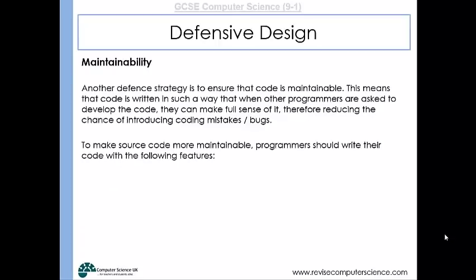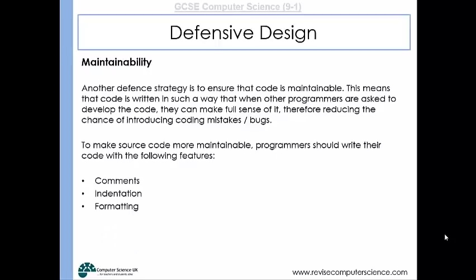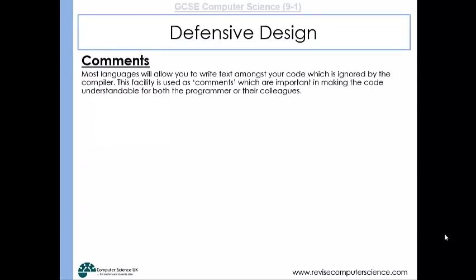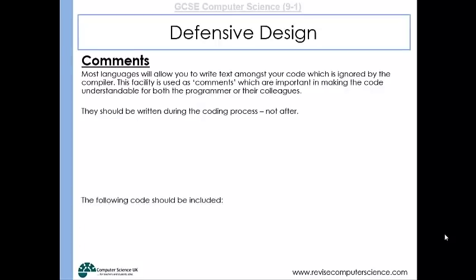To make source code more maintainable, programmers should write their code with the following features: comments, indentation, and formatting. When it comes to comments, this is where you write text which will be ignored by a translator when the code is being converted into machine code — but the text is there to annotate your code so that it's more understandable for the programmer or their colleagues if they're developing the code further. Comments should be written during the coding process and not after.